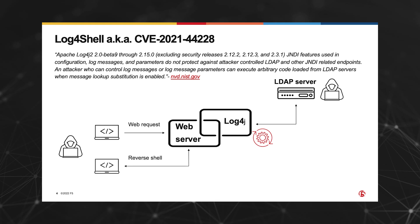Once the downloaded code gets executed, the attacker gets near total control of the vulnerable server. In some of the most dangerous exploit methods such as Log4Shell, the code instructs the server to open a reverse shell session and attach itself to a socket on the attacker's machine, effectively granting the attacker remote shell capability.